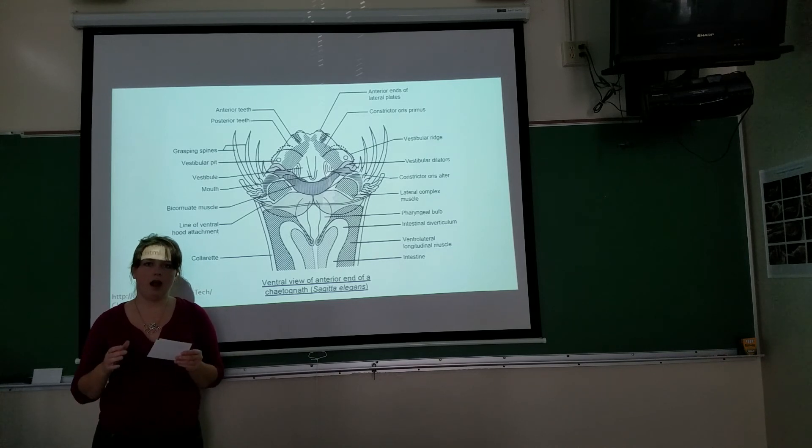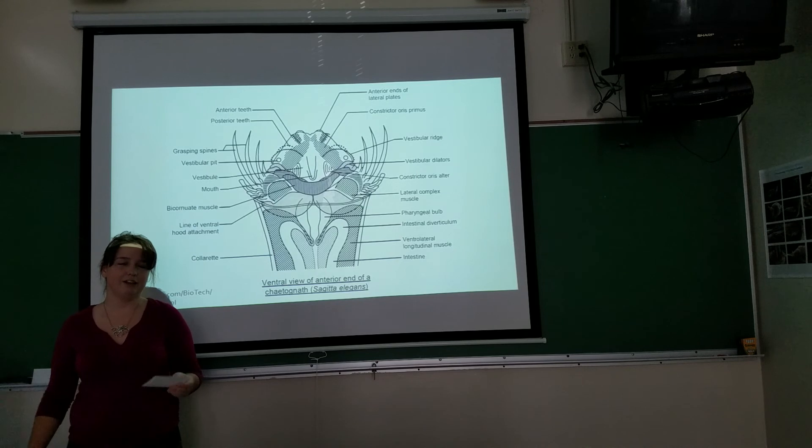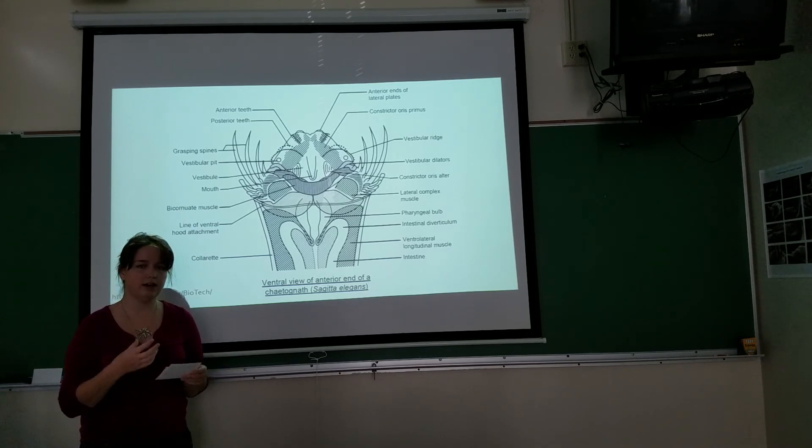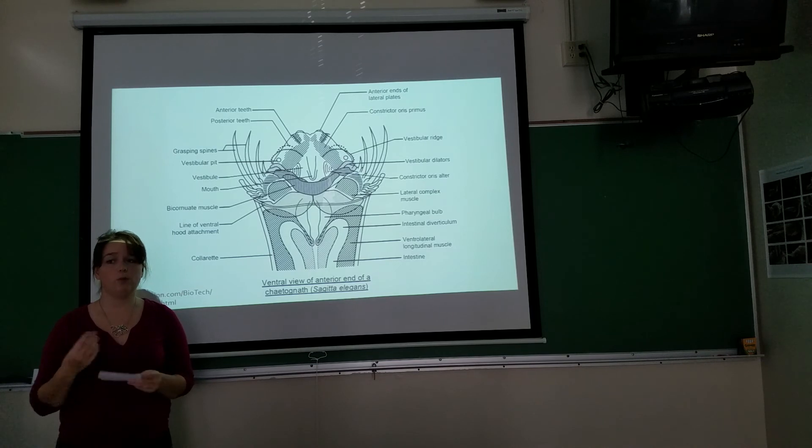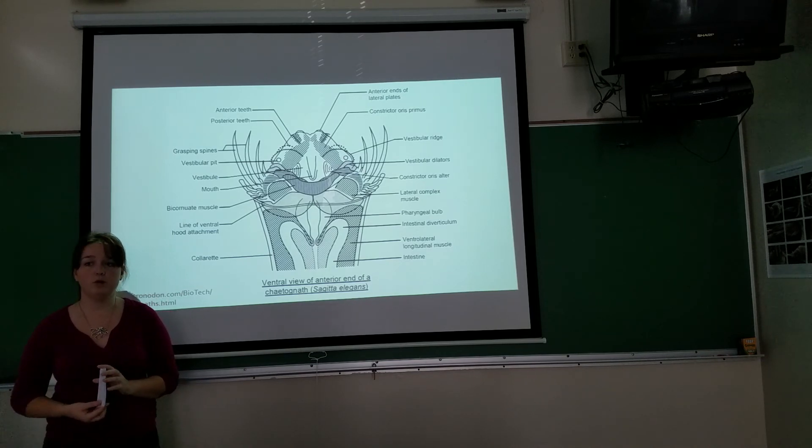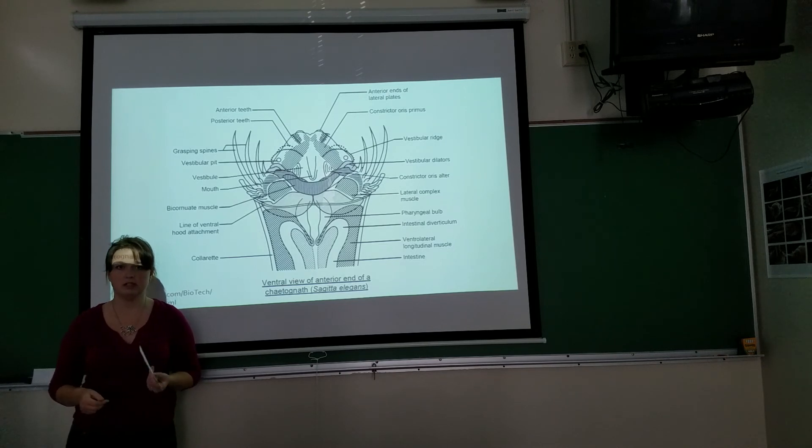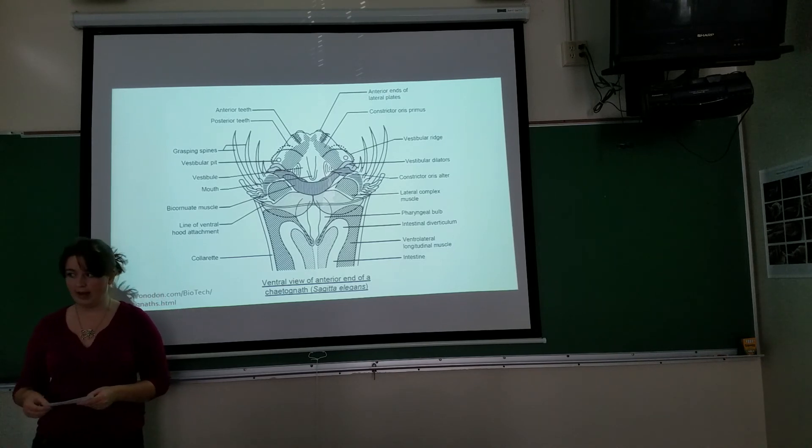It's unclear what quantities of Vibrio alginolyticus is in the Chaetognath, and specifically where it's located in the head. But we do know that it can produce significant amounts of TTX to assist the Chaetognath in its prey capture.